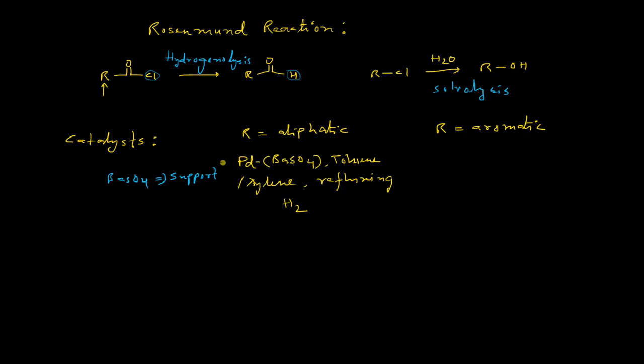When R is aromatic, we have to apply some modification and the reaction condition will be the same except we have to add some modifiers. Here also palladium on barium sulphate, solvent will be either toluene or xylene, then refluxing condition. However, in this case we need modifiers. Modifiers are required to stop the reaction after the formation of the aldehyde. These modifiers are basically catalyst poisons.